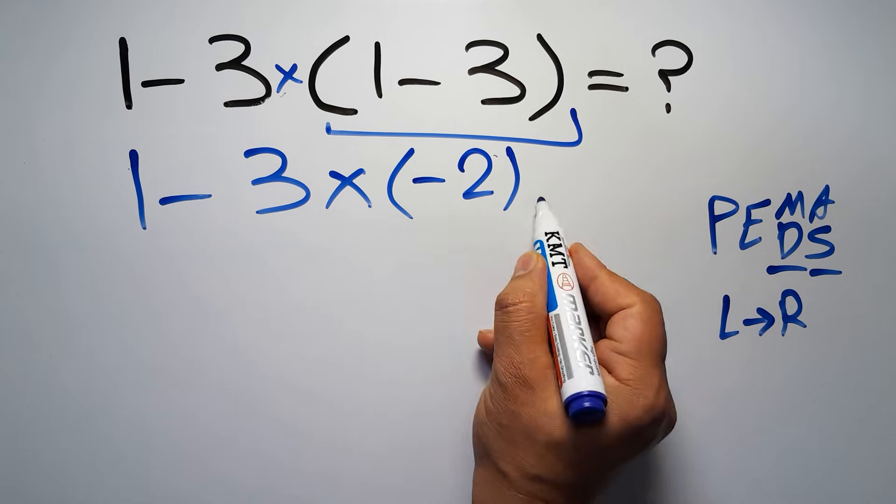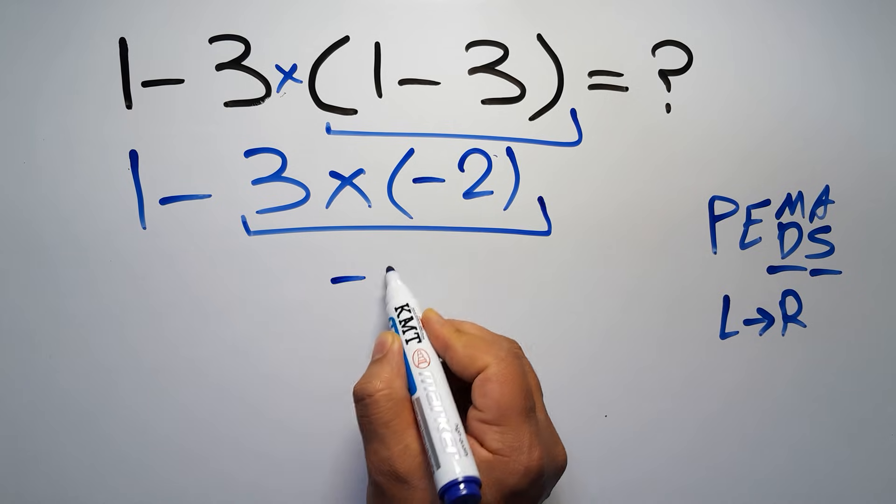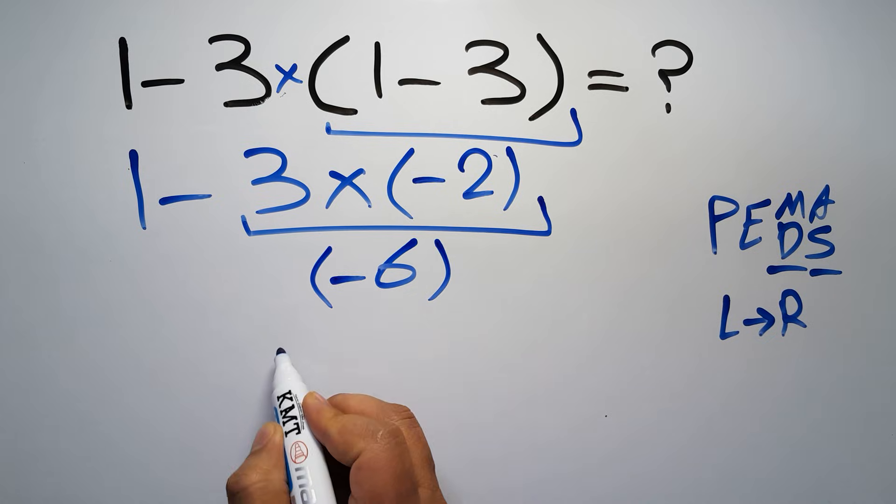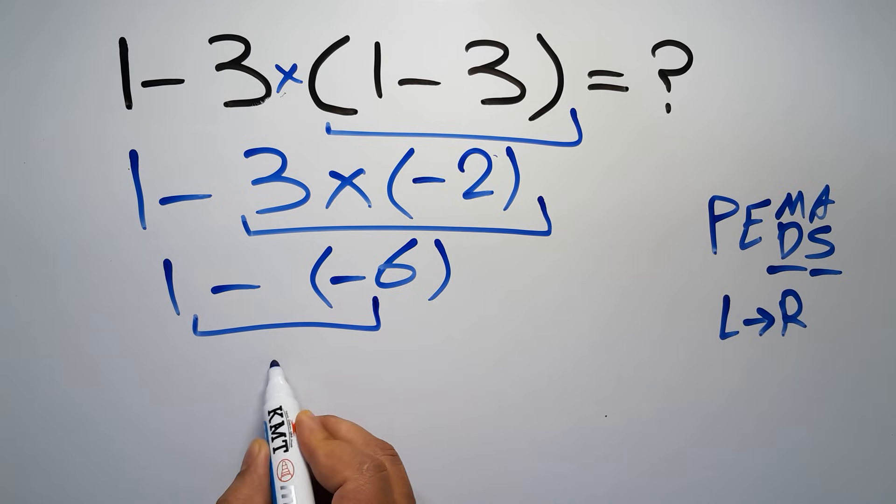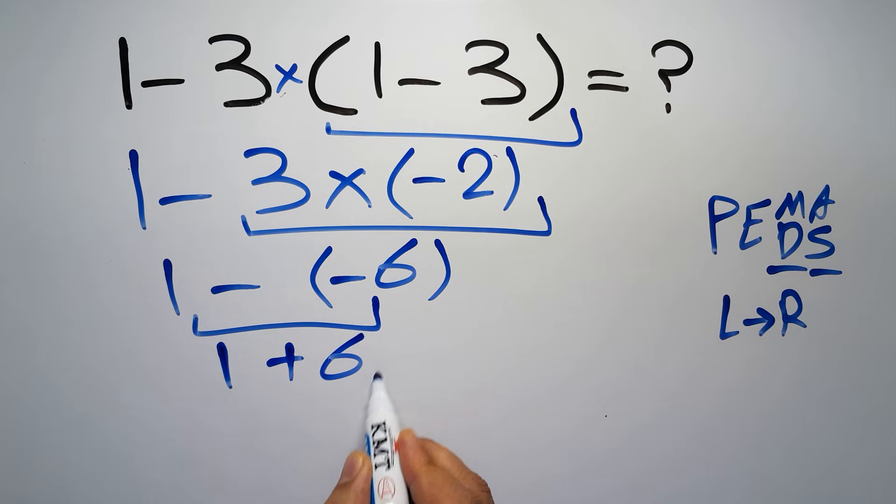3 times negative 2 gives us negative 6, so we have 1 minus negative 6. No—negative times negative gives us positive, so we have 1 plus 6, and this is all equal to 7.